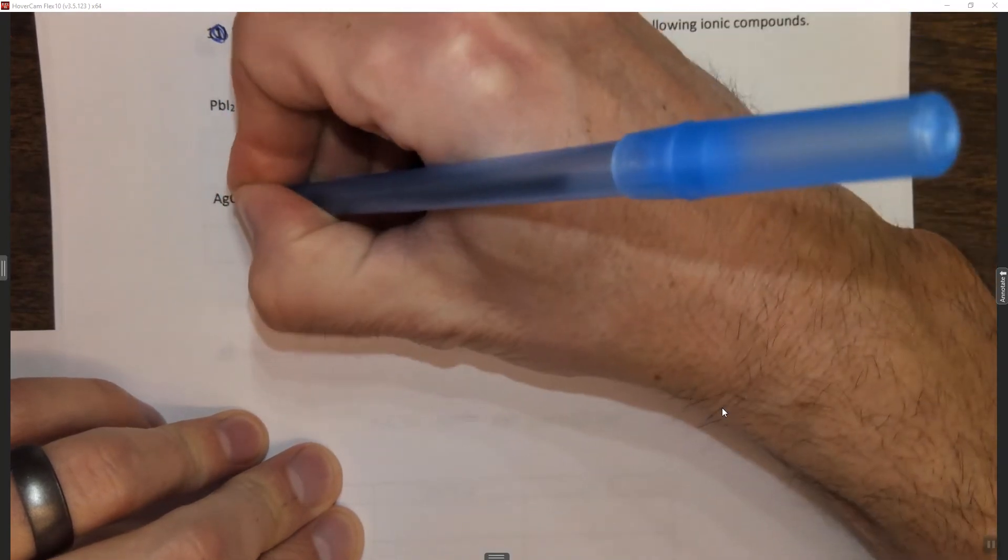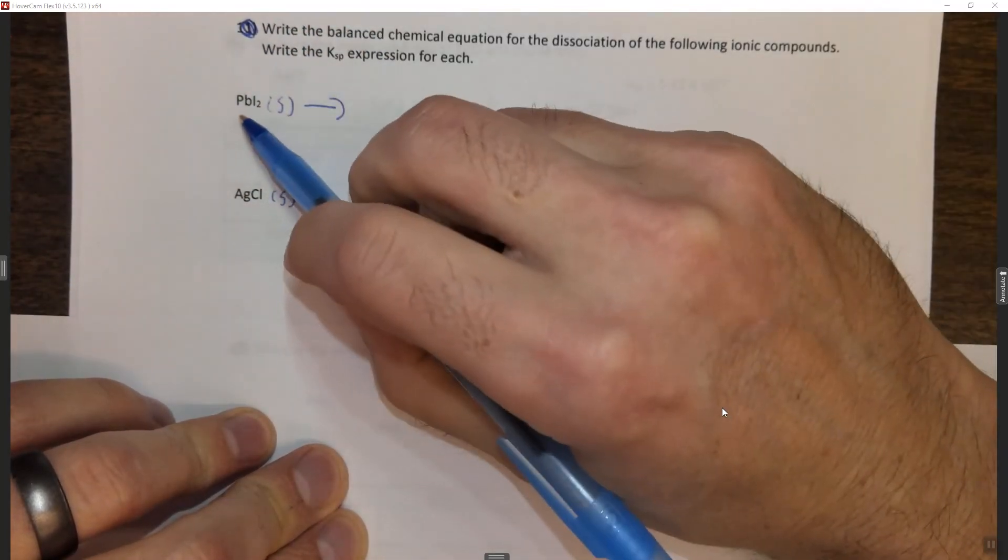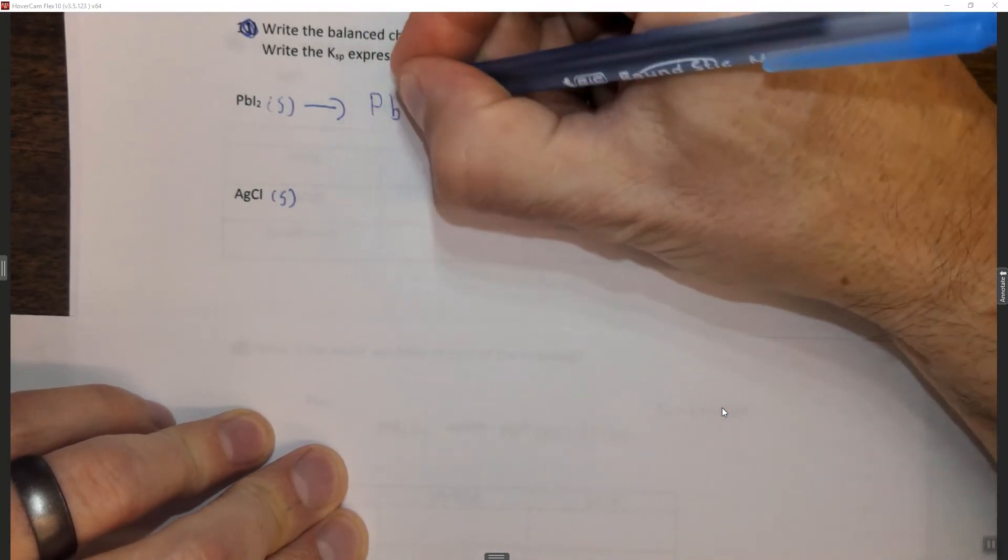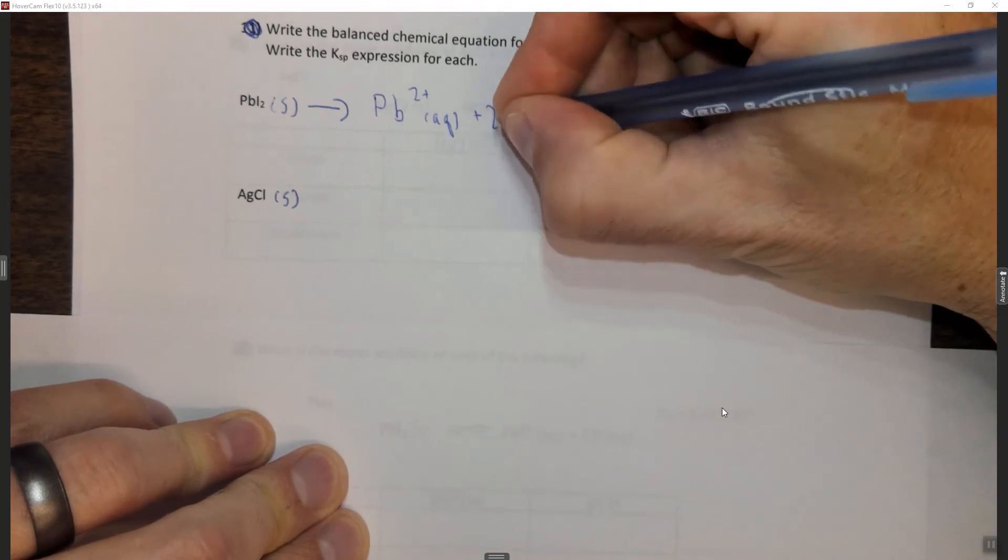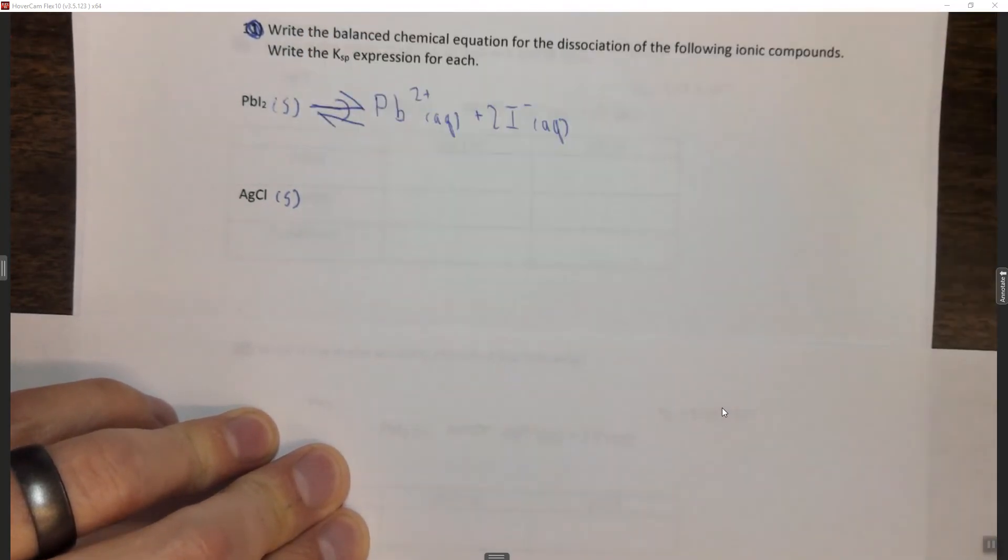So we have both of these as solids. In this case we have Pb²⁺ and I⁻. So we're going to end up with Pb²⁺ aqueous plus 2I⁻ aqueous. And I should write this as an equilibrium.